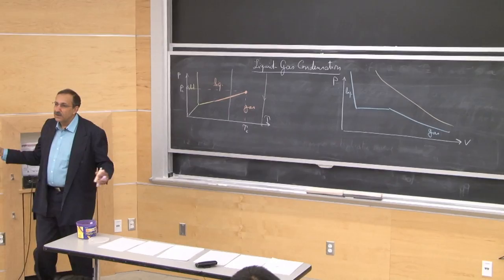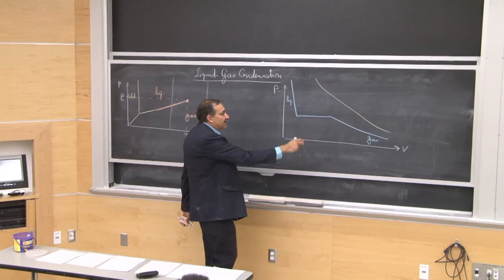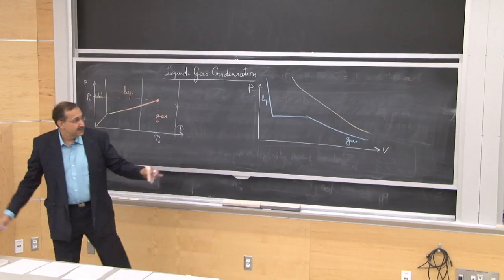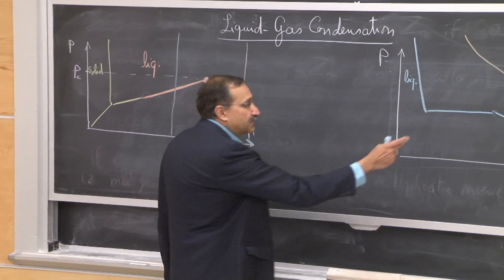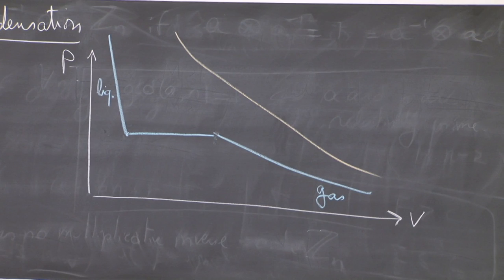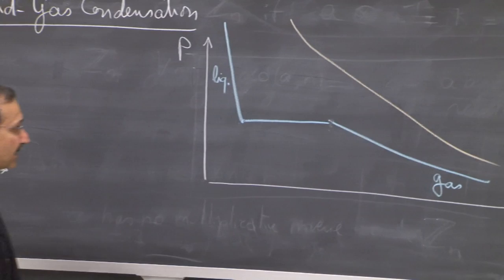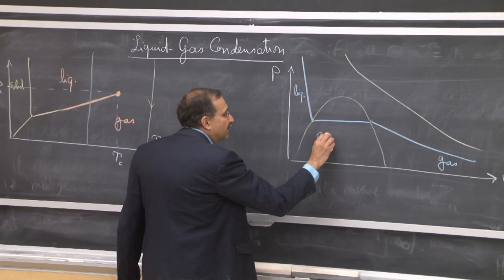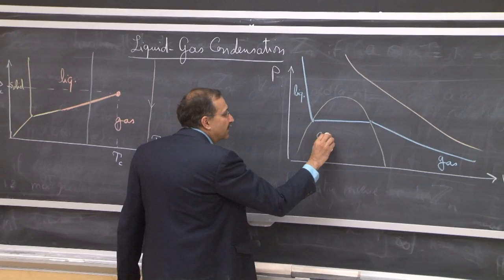Essentially, you could change the volume of a container. At high volumes, you start with entirely gas. At the same pressure and temperature, you squeeze it, and some of the gas gets converted to liquid — coexistence of gas and liquid — until you squeeze it sufficiently and the container is fully liquid. There is a coexistence boundary separating the two types of isotherms, and the boundary isotherm corresponds to being exactly at Tc.